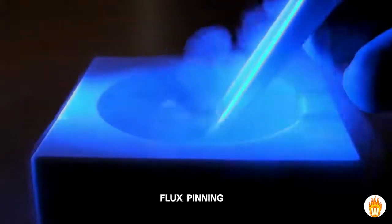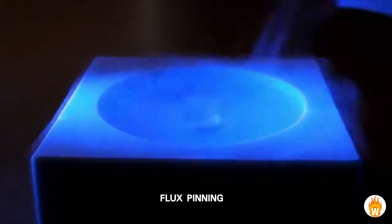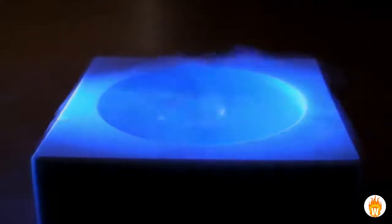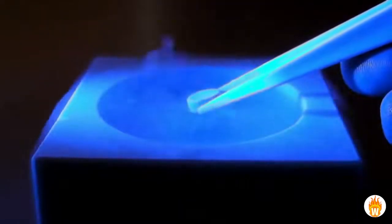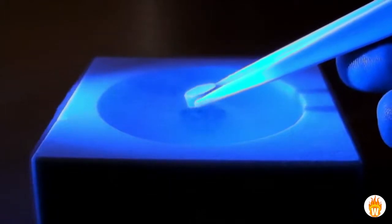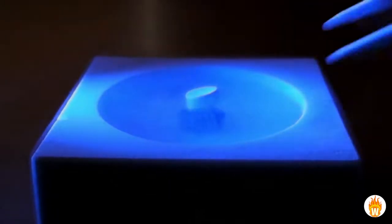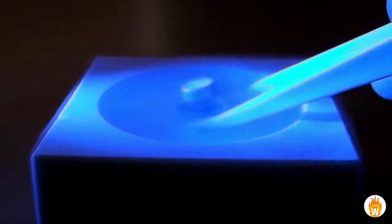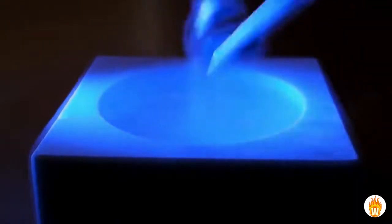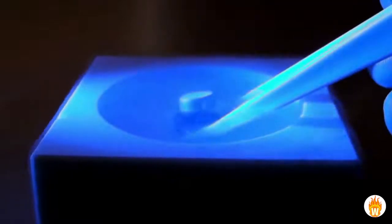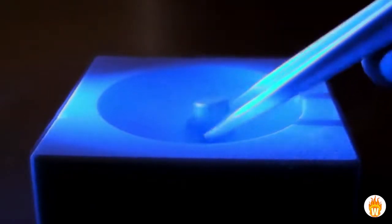This superconductor is slightly different. There are small impurities on its surface which allows magnetic field lines to run through them. When cooled down to its superconducting temperature, those field lines become trapped. This locks the magnet in space above the superconductor. The magnet and the superconductor don't want to move relative to each other.